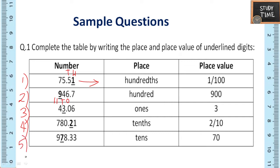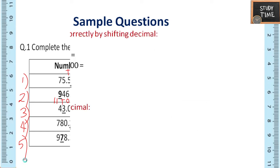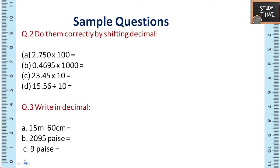Third one, 43.06, here it refers to ones, 3. Next 480.21, so it is 2 by 10, tenths position. Next second question: do them correctly by shifting decimal. So here when you multiply, first let me explain one sample with proper step by step. So 2.750 into 100, correct. So when you multiply you will be getting, first forget about the decimal point.